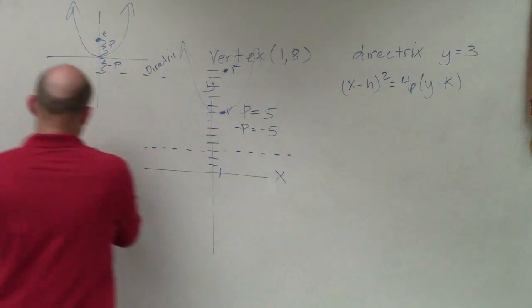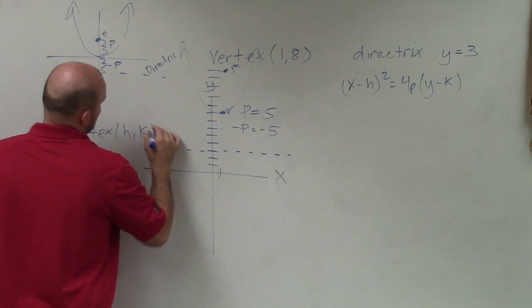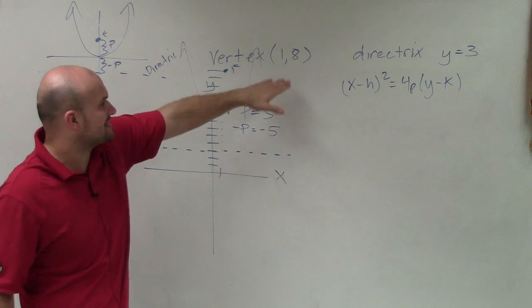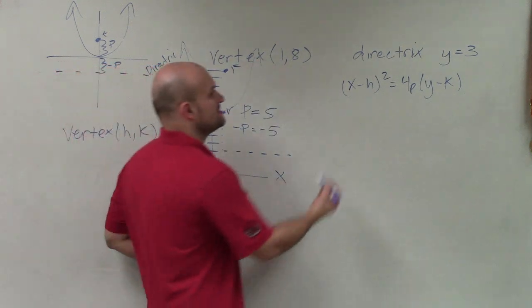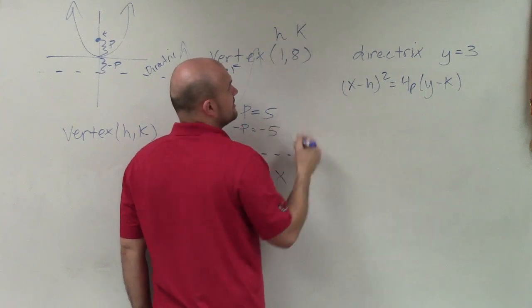Now remember, the vertex takes the form of (h, k). And this messes up a lot of students, is they want to plug in positive 1 and positive 8. But the formula says x minus h. h is 1. k is 8.